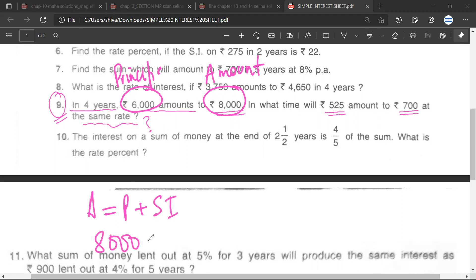Amount is 8,000, principal is 6,000, so simple interest would be 2,000. Is it correct? Yes. What should I do next?